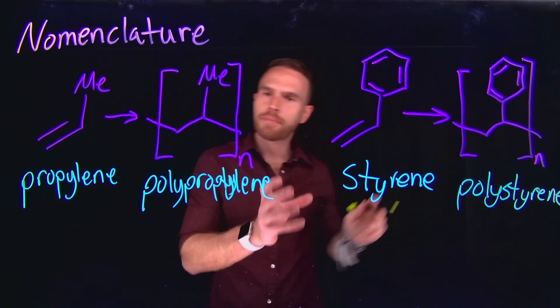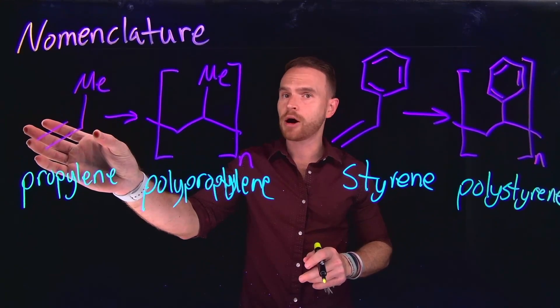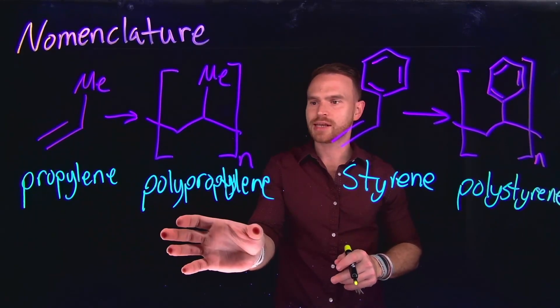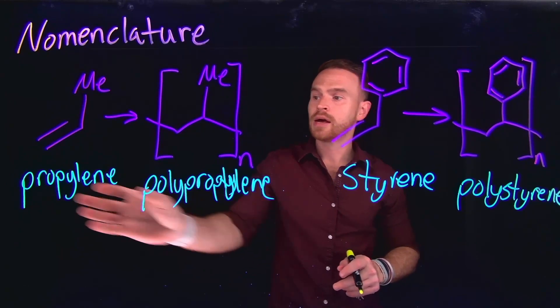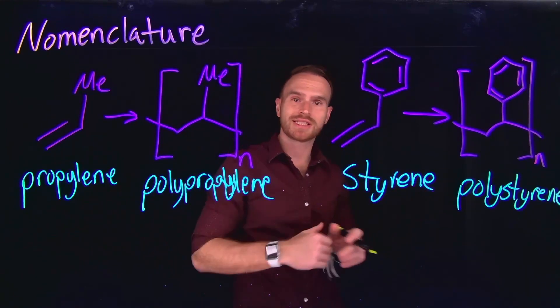Now for polymers that are made up of systems where there's only a single type of monomer, this is the straightforward way to name these. So you just write the name poly followed by the substituent, the monomer that was used. So polypropylene and polystyrene.